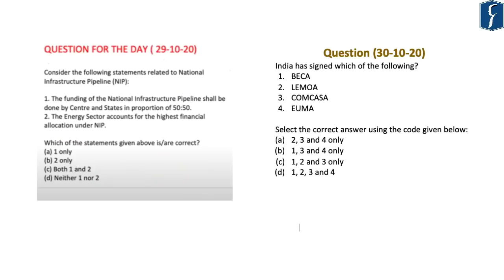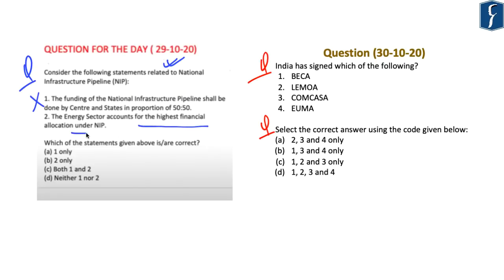Now the practice question for today: India has signed which of the following? 1. PECA, 2. LEMOA, 3. COMCASA, 4. EUMA. Select the correct answer using the code given below. Options: a) 2, 3 and 4 only; b) 1, 3 and 4 only; c) 1, 2 and 3 only; d) 1, 2, 3 and 4. Regarding the answer to yesterday's question on the National Infrastructure Pipeline: Statement 1 — funding shall be done by centre and states in proportion of 50–50 — is incorrect. Statement 2 — the energy sector accounts for the highest financial allocation under NIP — is correct. So the correct answer is b, that is, 2 only. With this we come to an end to today's discussion. Thank you.